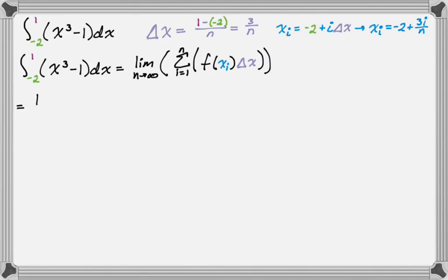So now it's substituting time. Limit as n approaches infinity, sum from 1 to n. We need to find f of x sub i. So f of x is the integrand, so it's x³ - 1. x sub i is negative 2 plus 3i over n. So every x that we see in the integrand, we're going to replace with negative 2 plus 3i over n. And it's cubed, so that's going to be awesome. And then don't forget those constants. So that's like the main thing that people forget when they do this. Like that minus 1 has nothing to do with x sub i, but it still needs to be there because we're doing f of x sub i.